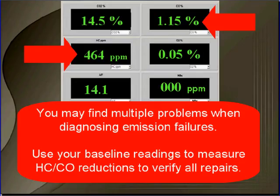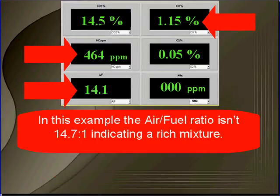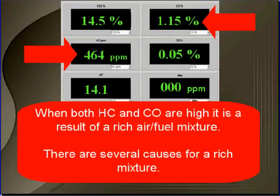You're here because you're working on a vehicle that failed emission. Your baseline test tells you that HC and CO are both high. Remember, you may find multiple problems when diagnosing any emission failure, so use your baseline readings to measure HC and CO reductions to verify any repairs that you do. In this example, we see that the air-fuel mixture ratio isn't 14.7 to 1 — it's indicating a rich mixture. Anytime both HC and CO are high, it's the result of a rich air-fuel mixture.